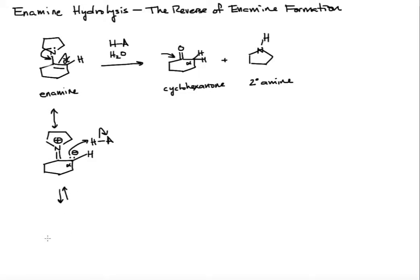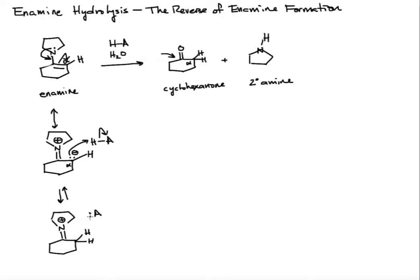We're forming a C–H bond and cleaving the hydrogen–conjugate base bond. In our equilibrium, we show the alpha carbon being protonated, so the alpha carbon now has two hydrogens. The nitrogen is still bearing the positive charge, and the counter ion is the conjugate base. We've accomplished one thing toward the product: the alpha carbon has two hydrogens. Let me show a resonance form of this species, which is called an iminium ion.